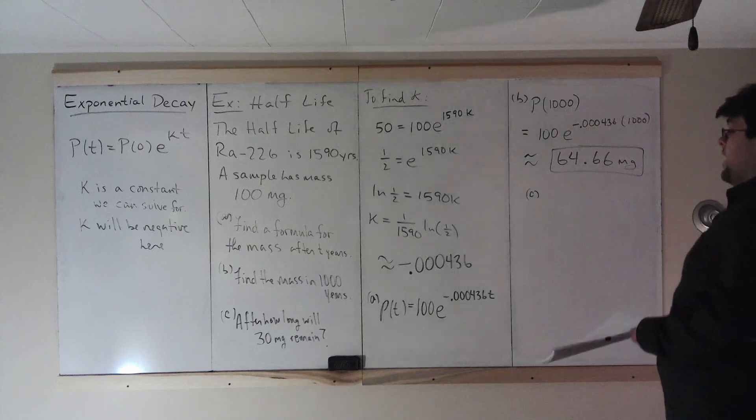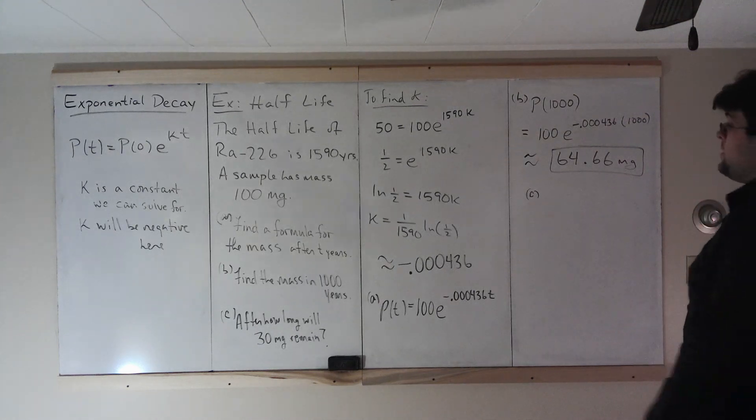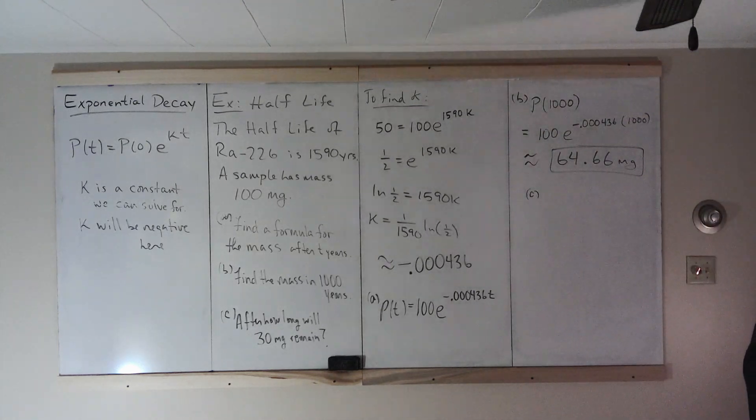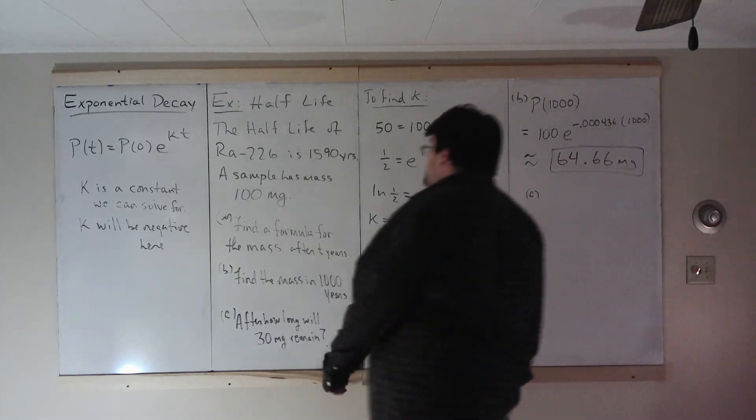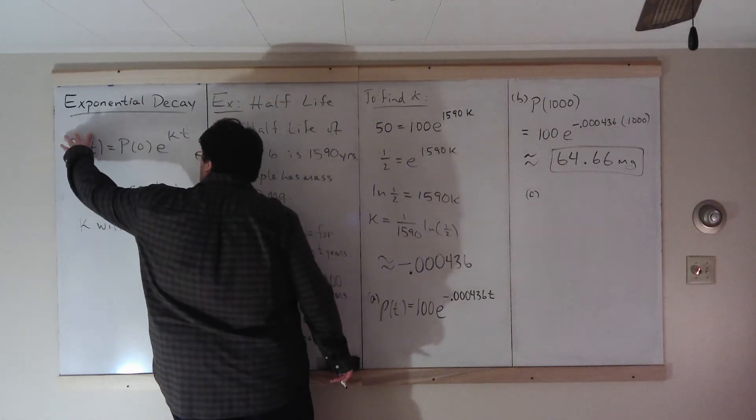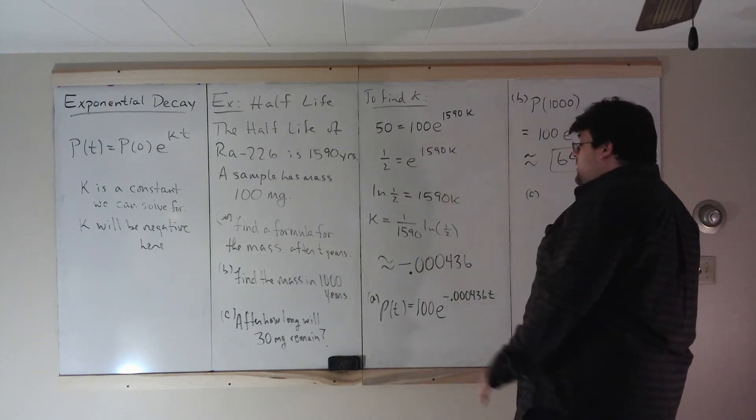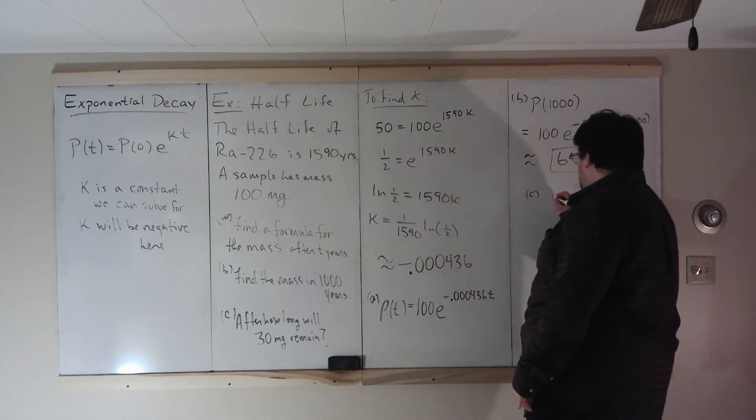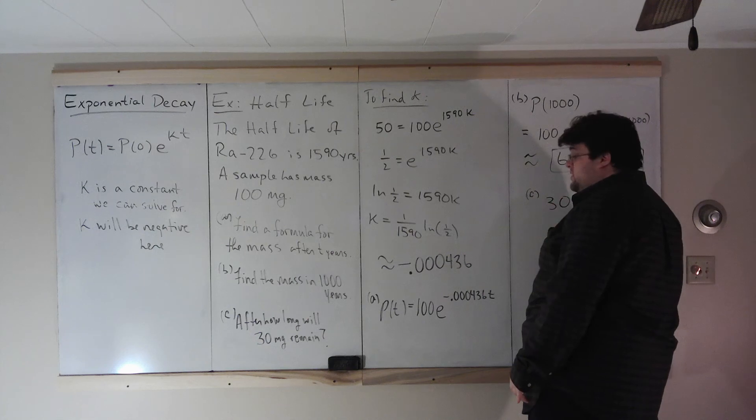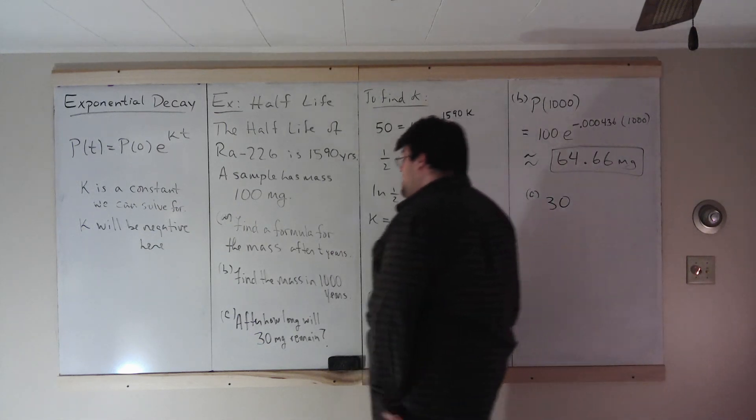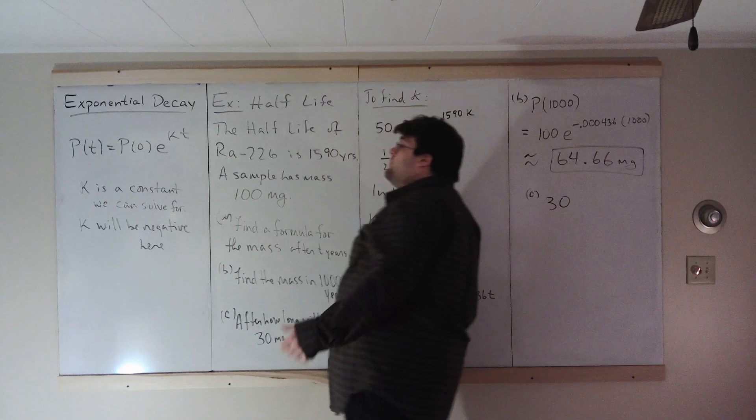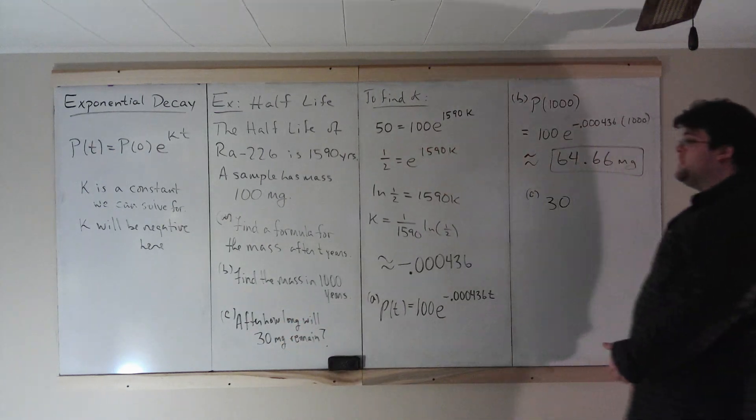Part c, after how long will 30 milligrams remain? Well, in part b, the variable we were solving for was this one on the left side. In part c, after how long will 30 milligrams remain? We're already given our left side quantity is 30. We're looking here for a time. So the variable we'll solve for is time.